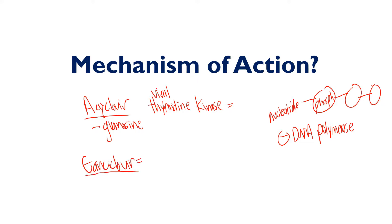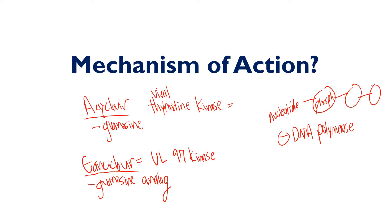Ganciclovir acts in the exact same way, except the kinase that monophosphorylates this guanosine analog is UL97 kinase — that's specific to ganciclovir. For acyclovir it's viral thymidine kinase that adds the very first phosphate group. Similarly, ganciclovir's UL97 kinase is only found in viral cells, not in normal host cells. So even though this drug inhibits DNA polymerase, it can never begin the process of phosphorylating the nucleoside in host cells, because UL97 kinase is absent there — only present in viral cells.